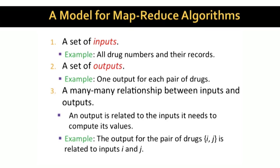And there is a many-to-many relationship between inputs and outputs. Each output requires certain inputs to compute its value. In the drug interaction example, each output pair, say i, j, is related to two inputs, i and j. It is common for outputs to depend on two inputs, but there are important examples where outputs depend on many more than two inputs.